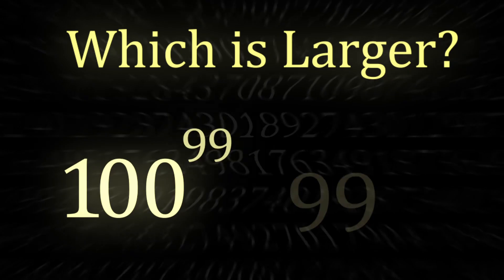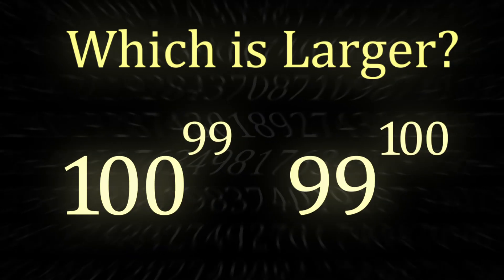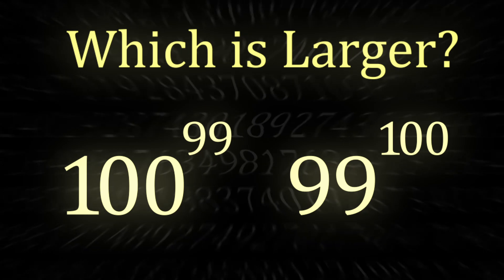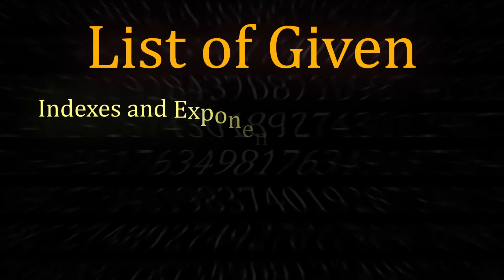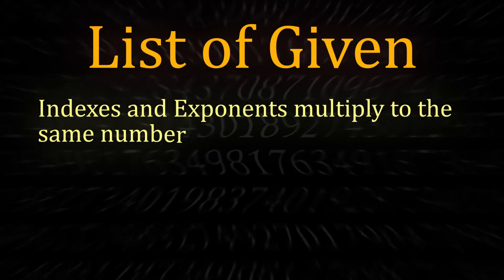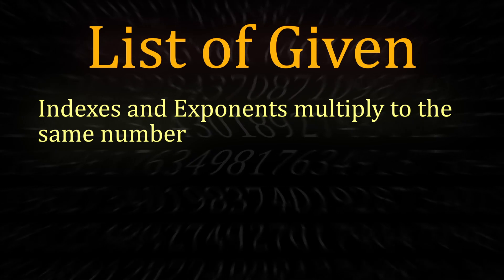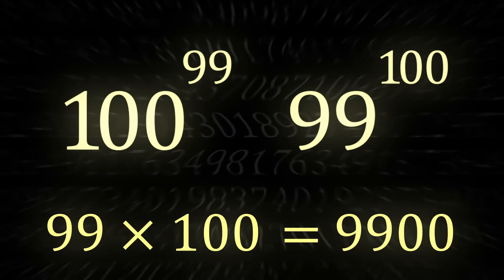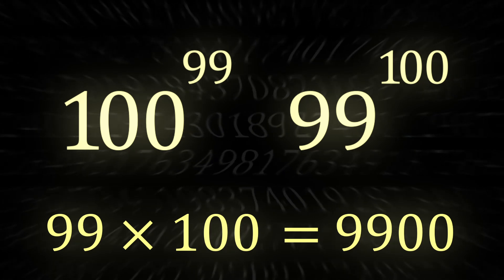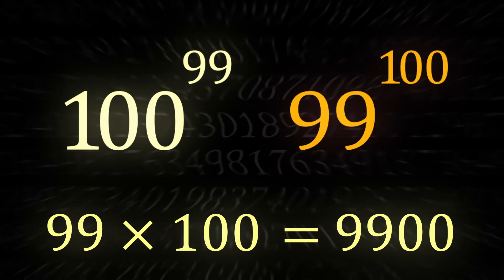Anyway, with that aside, let's get on with our actual goal: how can we figure out at a glance which value is greater? We need a couple of things: first, both values must have an index and an exponent that multiply to the same value — such as in the original example, they both multiply to 9,900. Then we need to check which base is closer to Euler's number. The one that's closer is the greater value. Alright, take a deep breath — we did it. See ya!